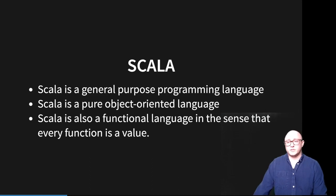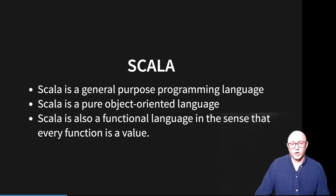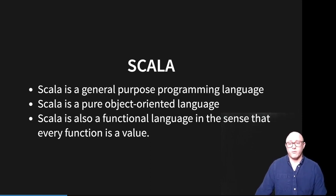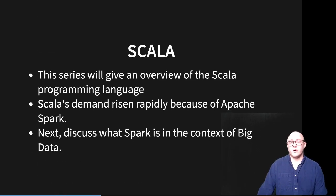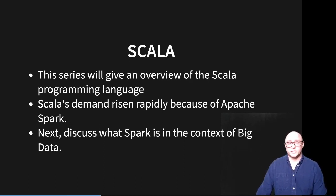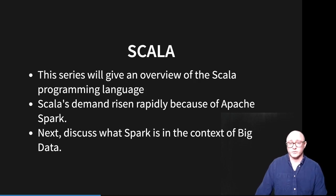First off, we're going to talk about just the general idea of Scala. Scala is a general purpose programming language, and it is an object-oriented language as well. Scala is also functional in the sense that every function is a value or every function is an object. This series will give you an overview of the Scala programming language — it is definitely not a deep dive, but we're going to be using it just in terms of data science, particularly how it works with Spark.